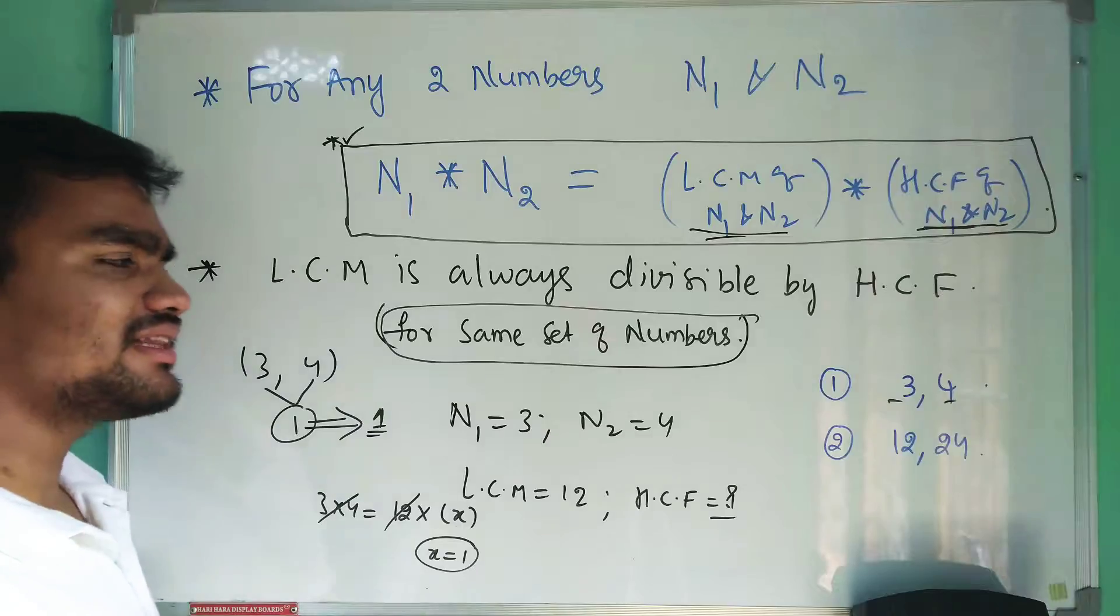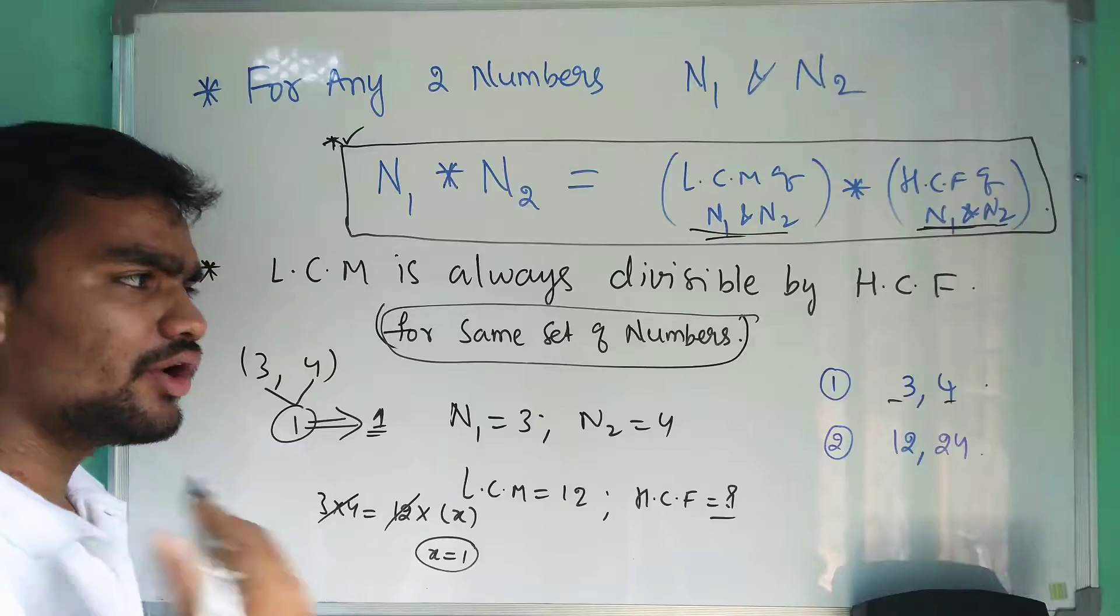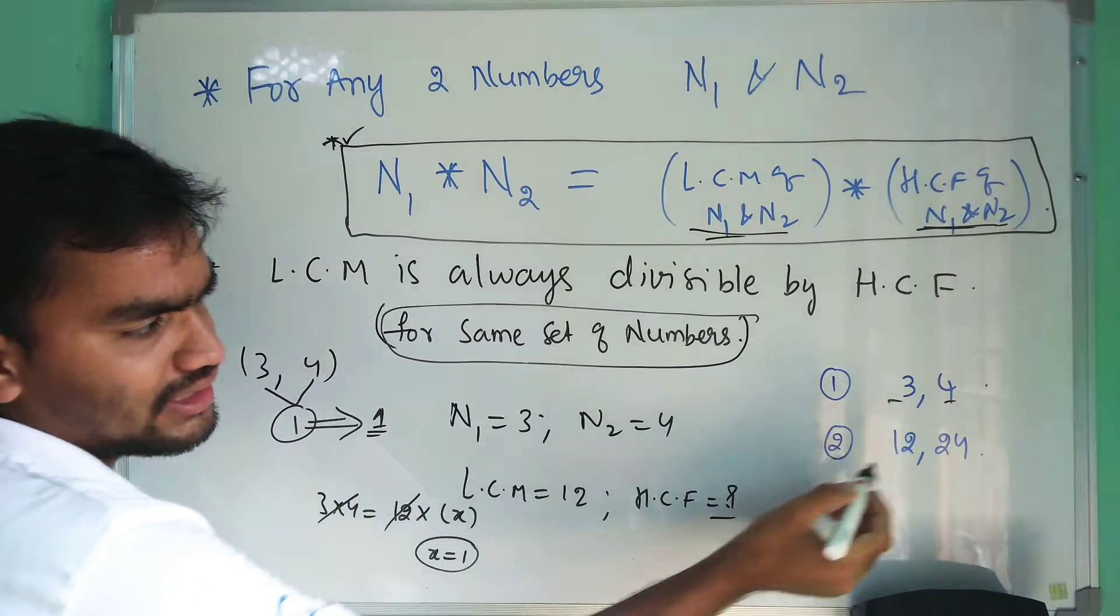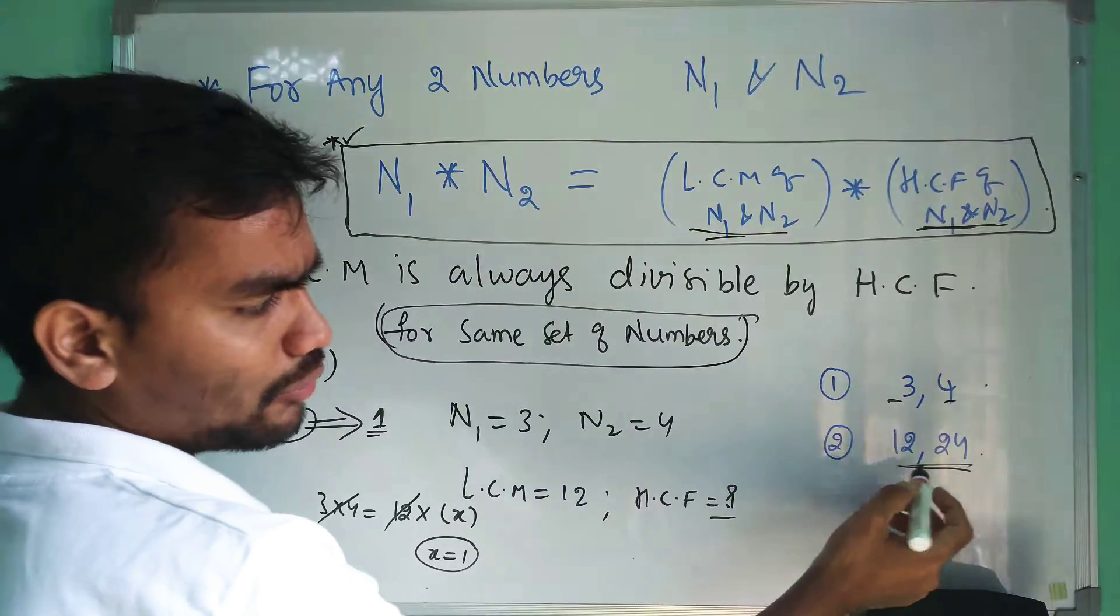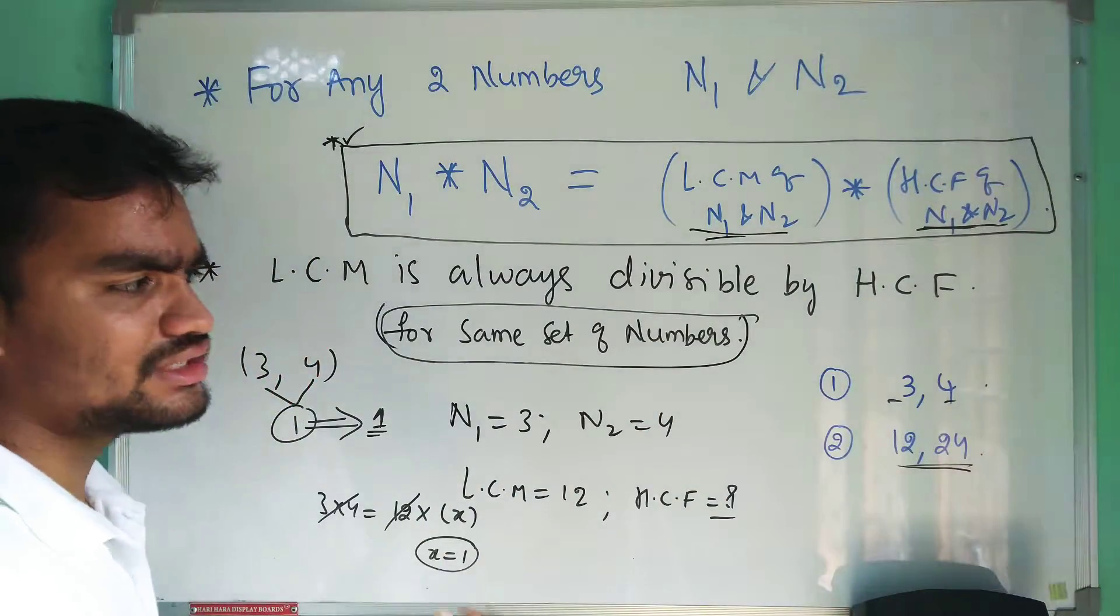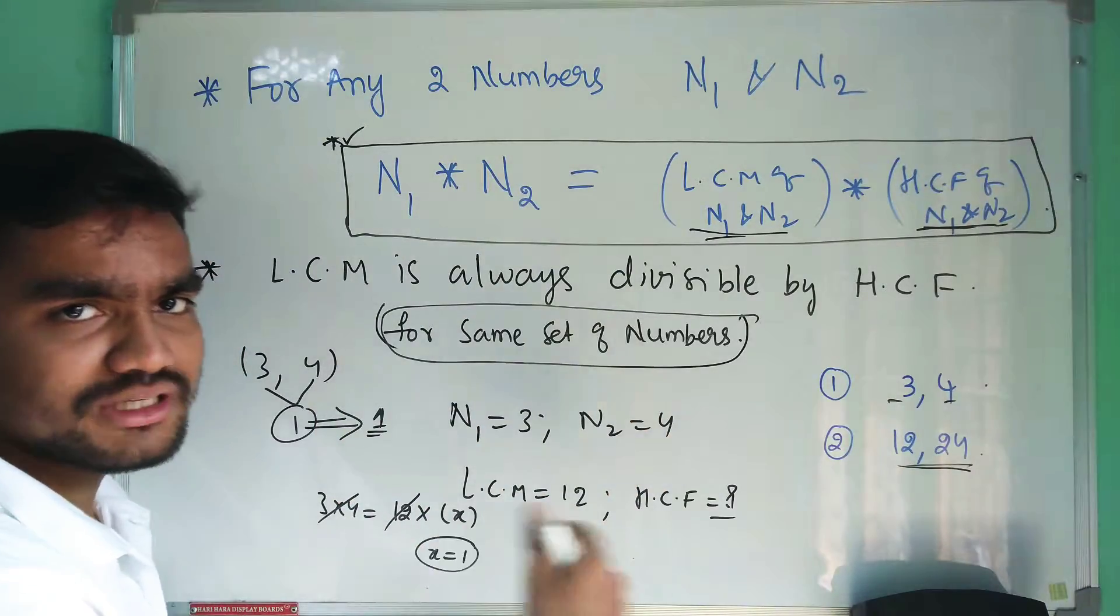So you might think why I am stressing this point as important. In order not to multiply, for example 12 into 24, it will take somewhat time to multiply 12 into 24. Instead of doing that, you can simply verify from the given set of four options.